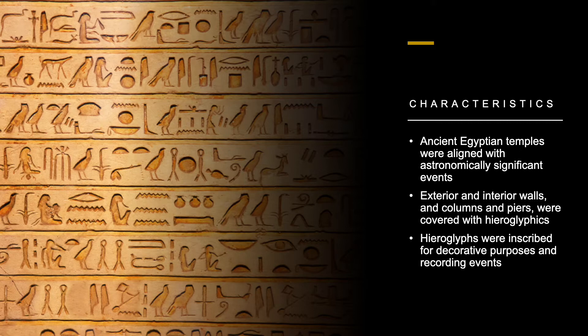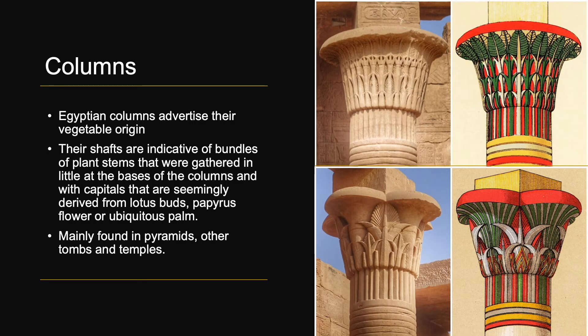Hieroglyphs were inscribed for decorative purposes as well as to record historic events or spells. One of the most iconic elements in ancient Egyptian architecture are columns indicative of bundles of plants such as lotus buds and papyrus flowers, found in palaces, pyramids, tombs, and temples. They advertise their vegetable origin through painted flowers and petals on top, and stems on the shafts of the columns that grow out and further apart as the column rises. This detail is effective in heightening the space inside and giving a sense of comfort while walking inside these structures.